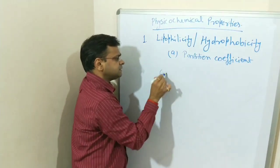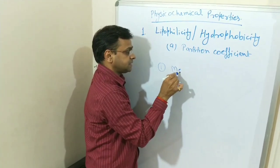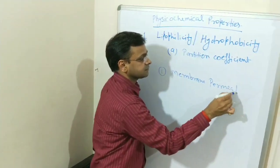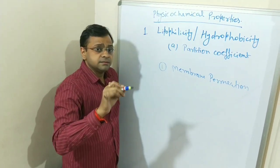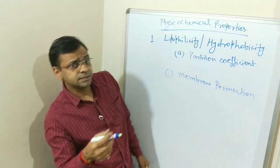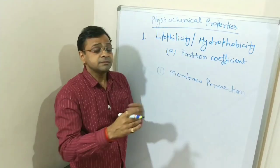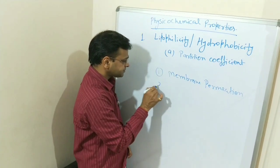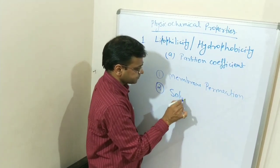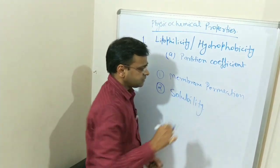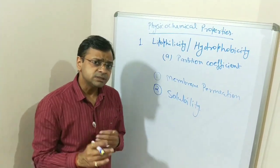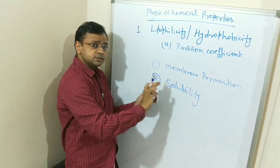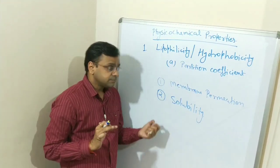First of all, lipophilicity is important for membrane permeation, because any drug which has to penetrate a membrane must have some affinity with the membrane. And second one is solubility, or simply we can say that aqueous solubility must be soluble in water. So membrane permeation and solubility, these two parameters are very important for a drug.